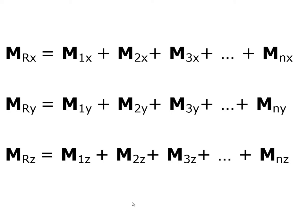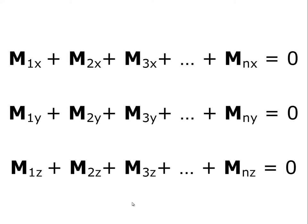Likewise, we sum all the y moments and all the z moments. We can summarize by saying that the sum of all the x components of all the constituent moments has to be equal to zero, the sum of all the y components of all the constituent moments has to be equal to zero, and the sum of all the z components of all the constituent moments has to be equal to zero.